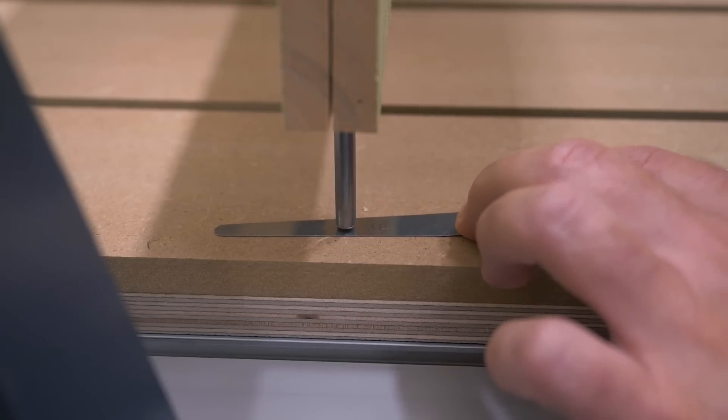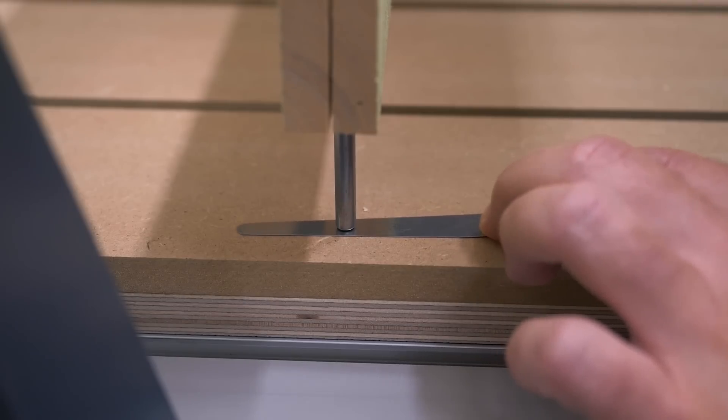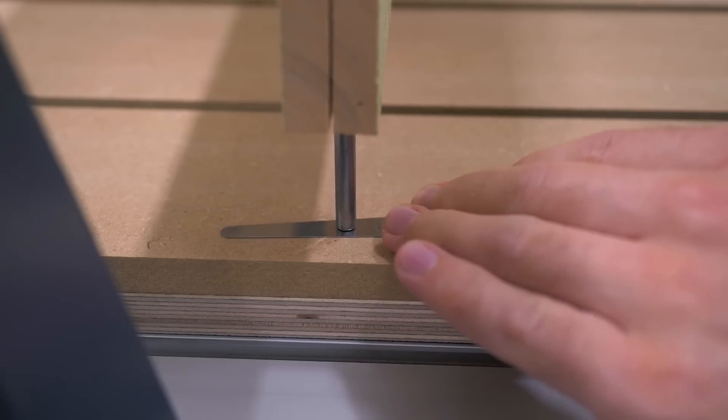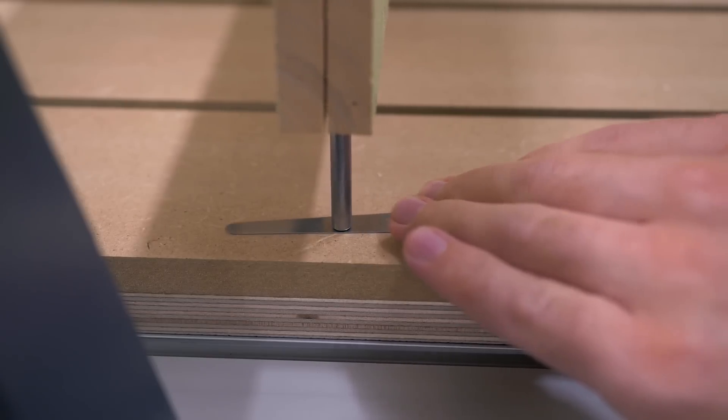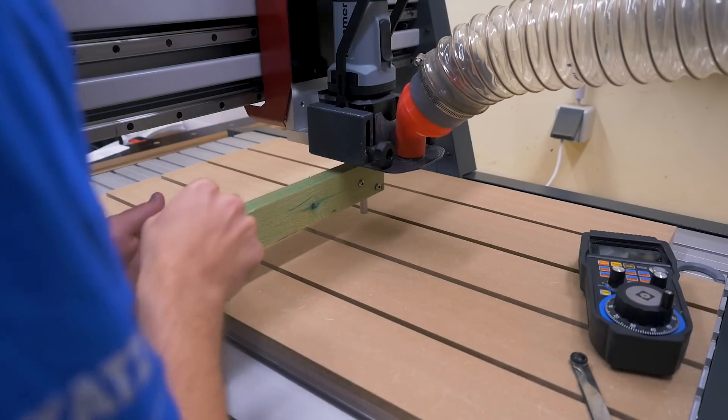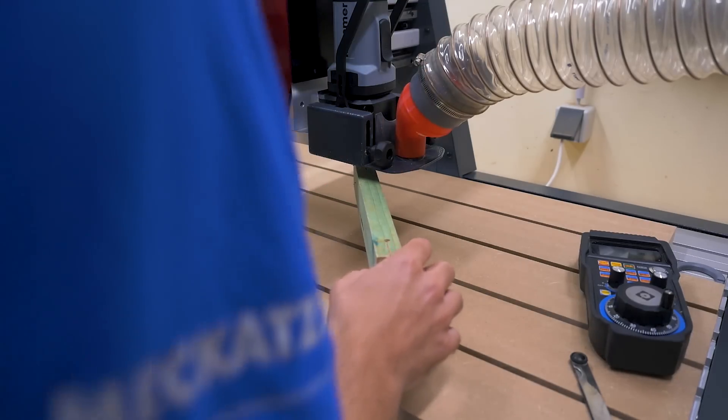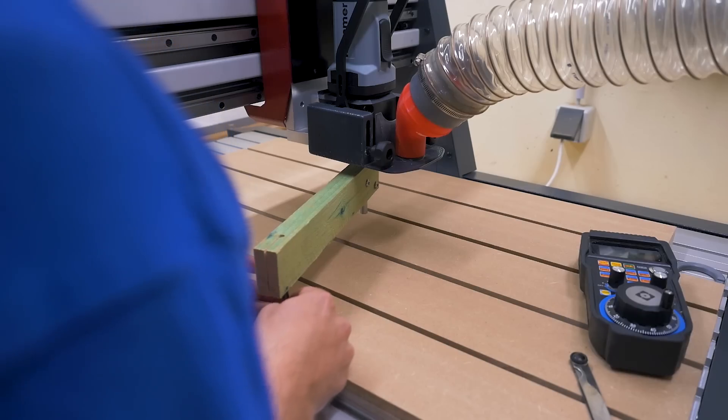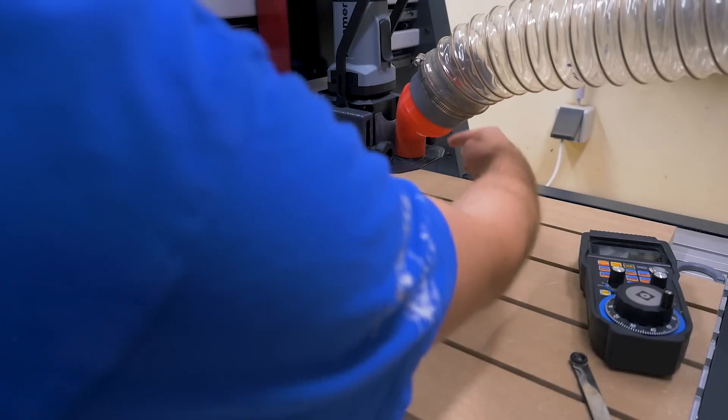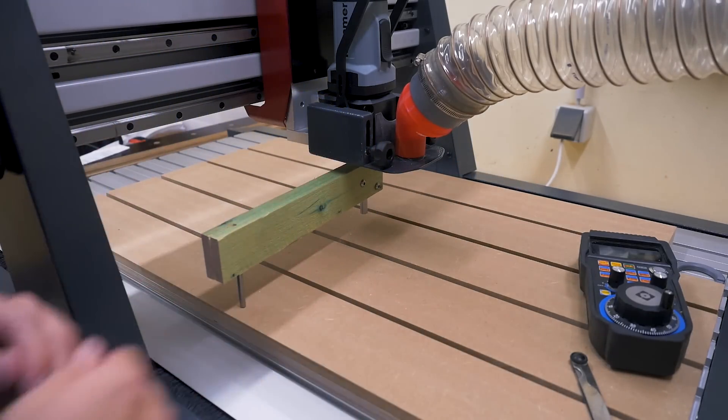I'll lower the spindle until it grabs this three tenths of a millimeter shim. Right here. Now I need to rotate it to the other side and measure there. Oh, it's already grabbing right here. Okay, then I need to start my measurement on the other side and then rotate to this side again and measure the gap.